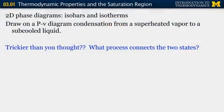Welcome back. Last time we were talking about 2D phase diagrams, and specifically we introduced isobars and isotherms and what the saturation region looks like on those diagrams. We were looking at a pressure-volume, specific volume diagram, and our question was: draw the process on a PV diagram of condensation, where you're moving from a superheated vapor to a sub-cooled liquid.